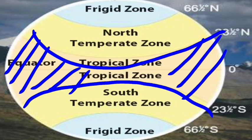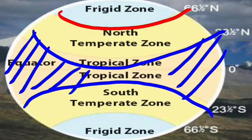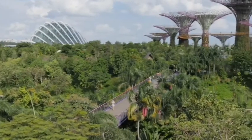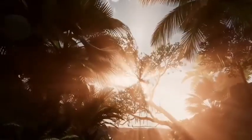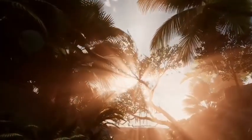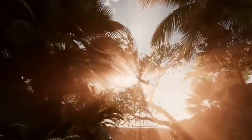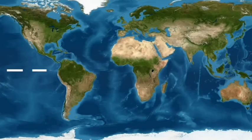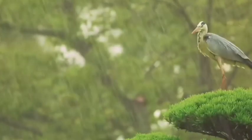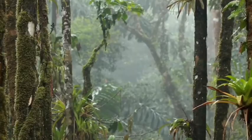The third is the cold zone or frigid region, found between 66 and a half and 90 degrees north and south of the equator. The tropical or hot zone is characterized by high temperature throughout the year. The mean annual temperature is greater than 20 degrees Celsius, but this temperature decreases as we move away from the equator. Rainfall also decreases as we move away from the equator.